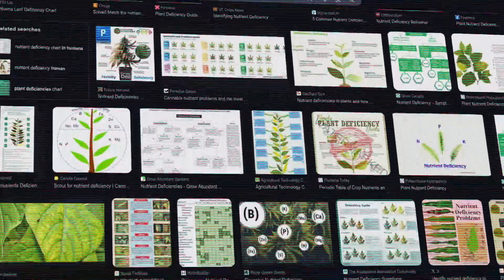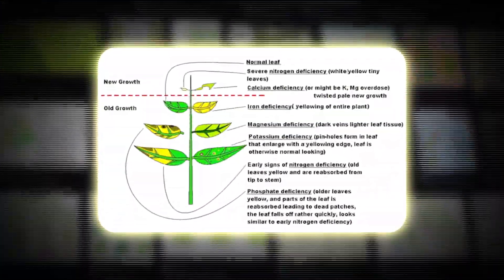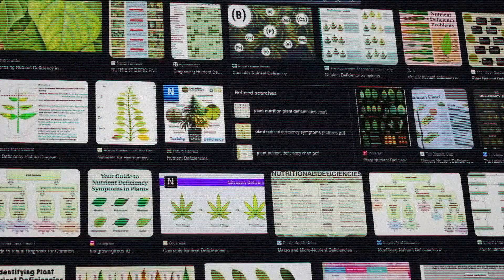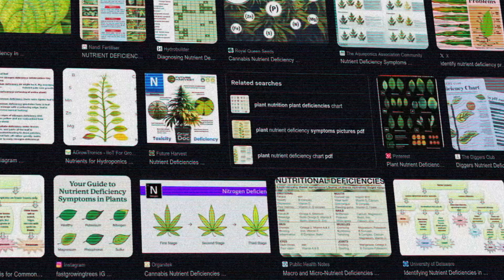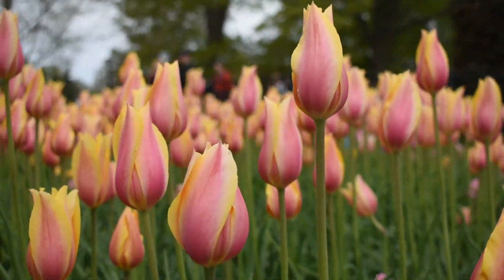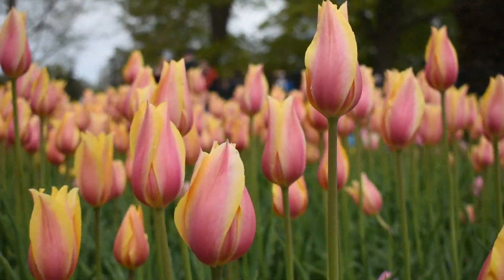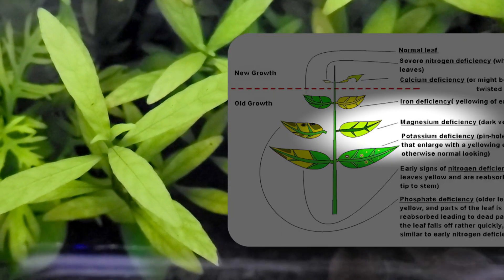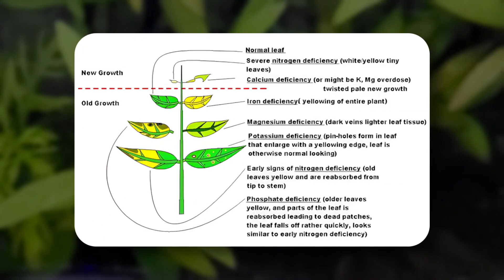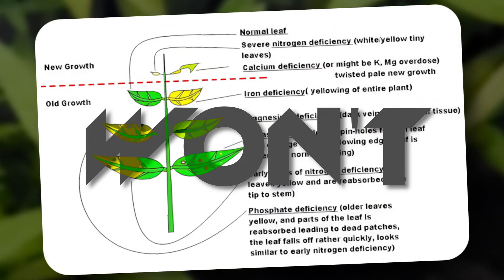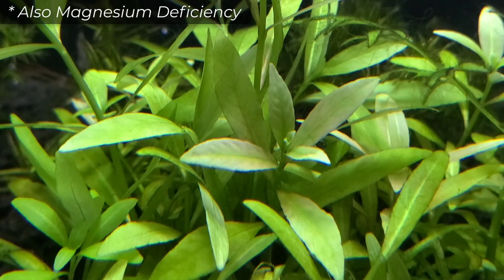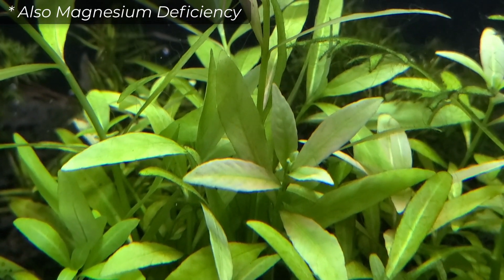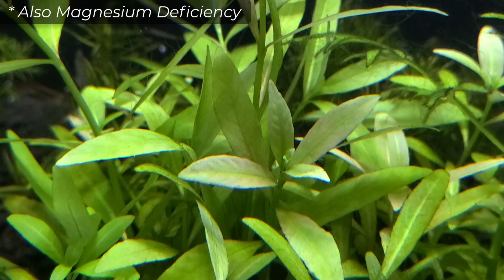If you look online for nutrient deficiencies, you will find this chart or similar charts wherever you go. Some of these charts are actually for terrestrial plants rather than aquatic plants. If you look closely, you will see that these deficiencies can also be found on aquarium plants. However, this chart won't tell you the entire picture. That being said, there's nothing wrong with using a chart like this as a quick reference.